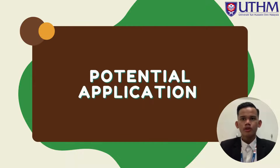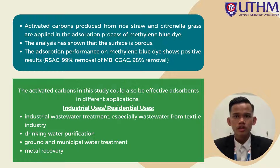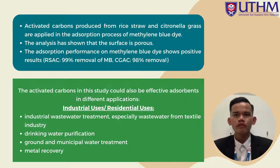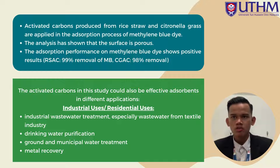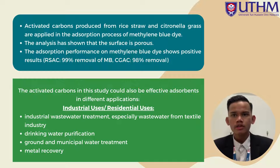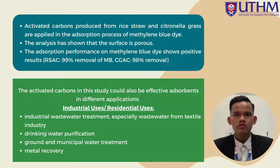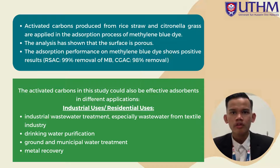I will now proceed with the potential application part. In this study, the activated carbon produced from rice straw and Citronella grass is applied in the adsorption process of dye. The analysis of both activated carbons shows the surface is porous. The adsorption performance by activated carbon in this study shows positive results. However, the activated carbon in this study could also be effective as an adsorbent in adsorption processes involved in different applications for industrial use, especially in the treatment of textile wastewater and residential use, for example drinking water purification, water treatment, and water recovery.